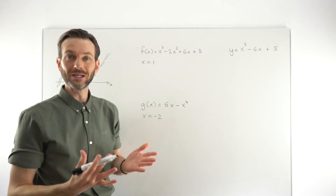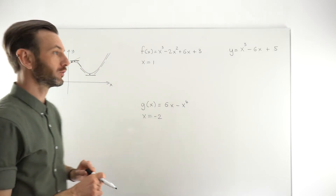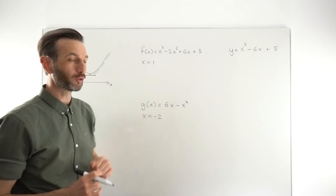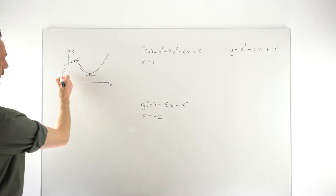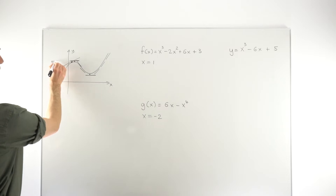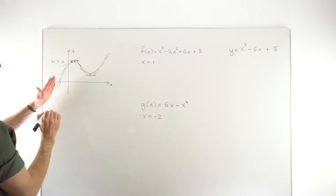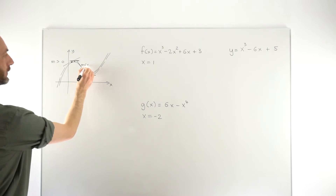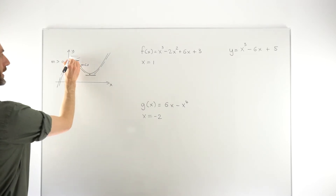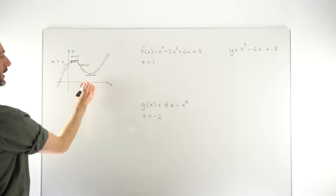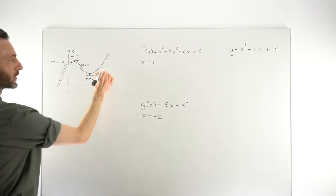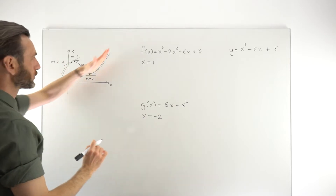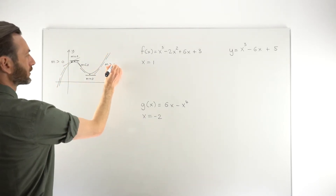We can talk in terms of derivative, because derivative and gradient are interchangeable terms. In the part of the curve sloping up, the gradient of each tangent line is positive. In the part sloping down, the m values are negative. At each critical point, the m value is zero. Over here where we're sloping up again, the y values are going up and the gradient is greater than zero.